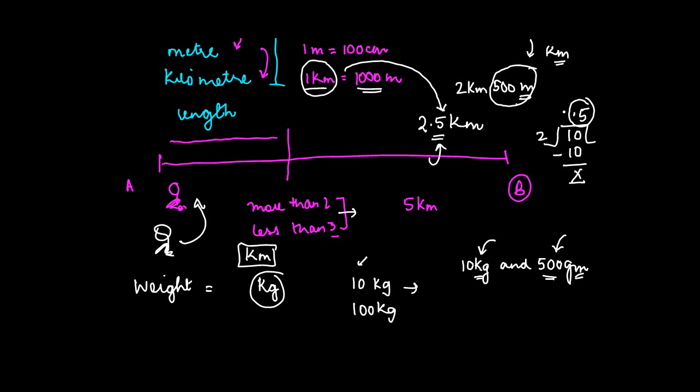...meters equaled half a kilometer, we can convert 500 grams into kilograms. We divide 500 by 1000. Why 1000? Because 1000 grams equals 1 kilogram. So we say 10 kg and 500/1000 kg, or 10.5 kg.